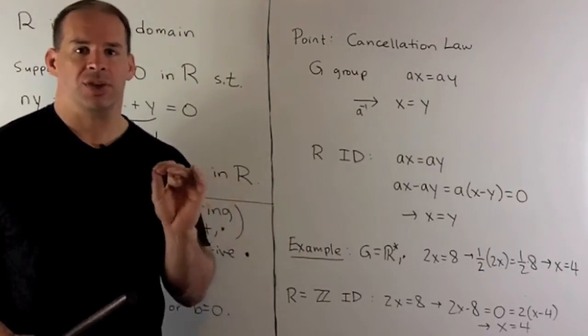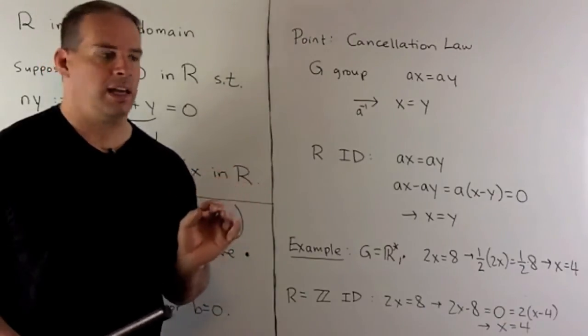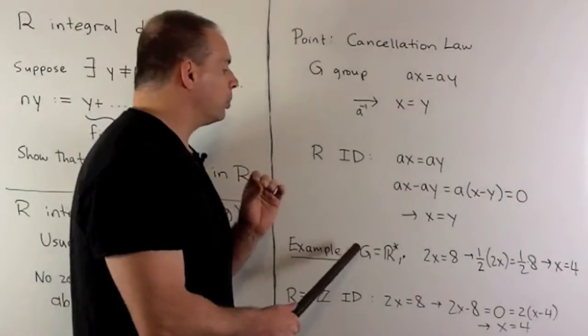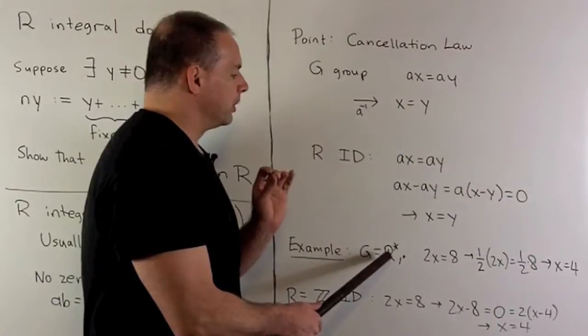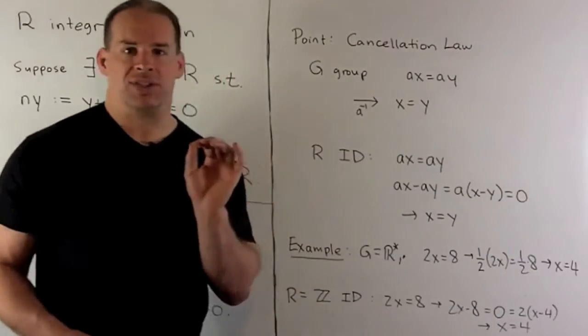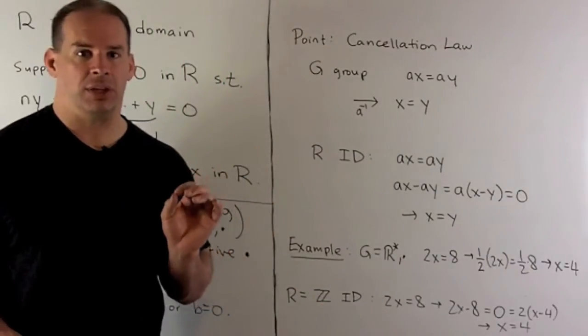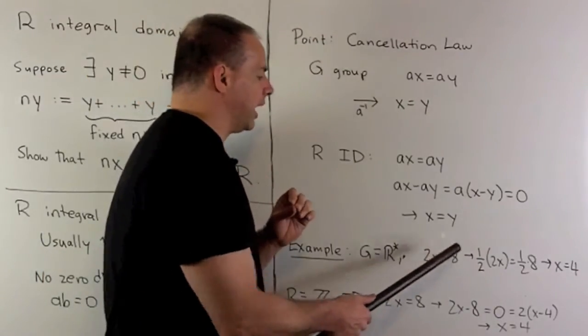See this in action. This isn't going to be heavy lifting, but it'll give you the idea. For the group, let's use the real numbers minus zero under multiplication. I want to solve the equation 2x equals 8.